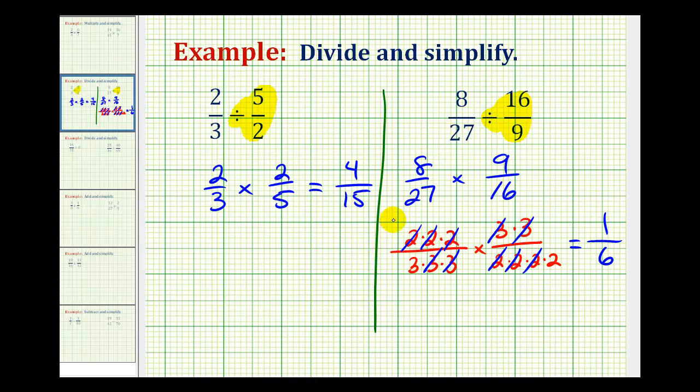I do want to make one quick comment here. Instead of writing this out in prime-factored form, we could have identified a common factor of eight between eight and sixteen, meaning there's one-eight in eight and two-eighths in sixteen. We could also identified a common factor of nine between nine and twenty-seven, meaning there's one-nine in nine and three-nines in twenty-seven, giving us the same product of one-sixth. But I think when you're first learning this prime-factorization technique here is nice because it's very similar to how we simplify fractions. And it can also be helpful when adding fractions when we have to obtain a common denominator.